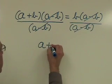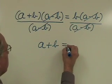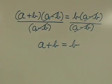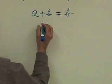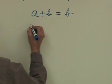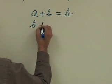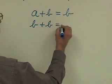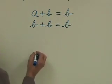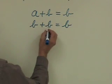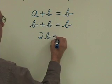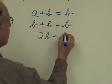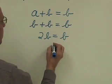a plus b equals b. Since a equals b, I can make the substitution, and I get b plus b equals b. One b plus one b is two b. So on the left side of the equation, I have 2b, and on the right side b.